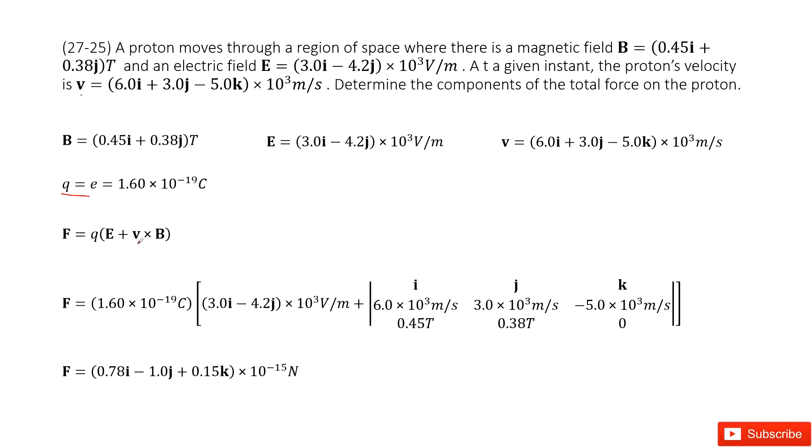And E, V, B are vectors, right? So we input these vectors inside. And for the cross operation, we can write it in this matrix.